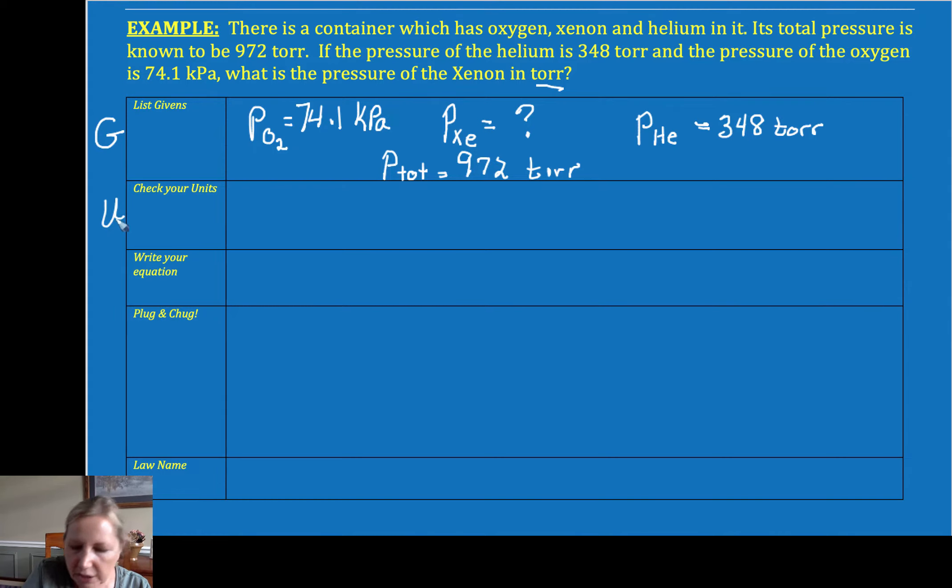Now I need to check my units. And lo and behold, I can't have one in kilopascals and the other in torr. The question specifically says I have to answer in torr. So I'm going to convert that 74.1 kilopascals. I want to get rid of kilopascals and I want torr.